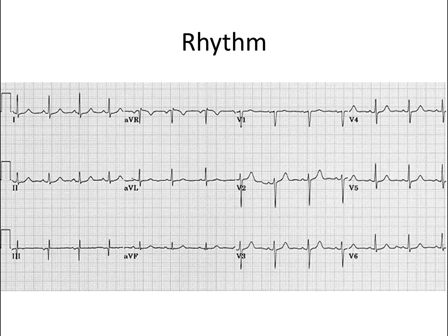Next, we want to move on to figuring out the rhythm. The first step is to determine whether you have a narrow complex QRS or a wide complex QRS. The dividing line is one hundred and twenty milliseconds, or three small boxes. A normal or narrow complex is less than that. If you have more than one hundred and twenty milliseconds, that's a wide complex QRS, which suggests the conduction system is either not being used because the rhythm is originating in the ventricles, or something is wrong with the conduction system such as a bundle branch block. In this patient, you can see that the QRS is very narrow.